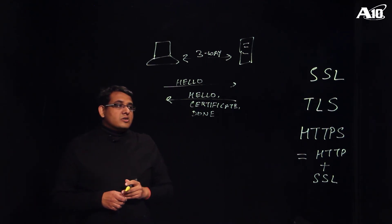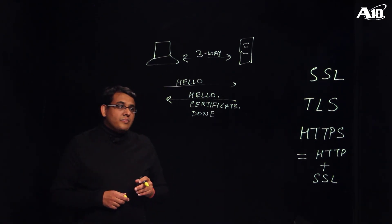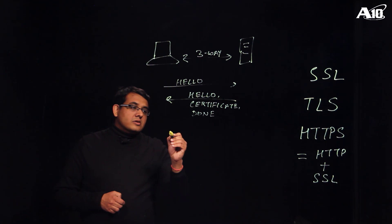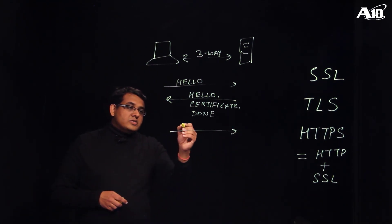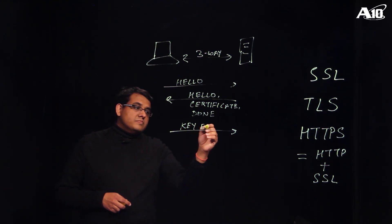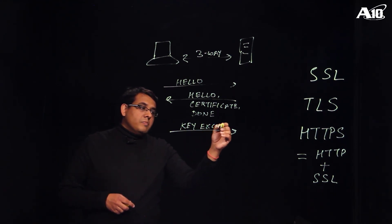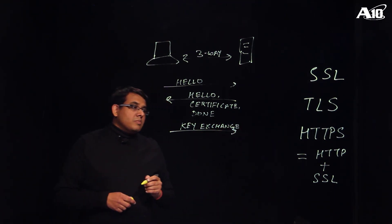The client will use the certificate to derive the public key of the server as well as to verify the identity of the server. It will compute a pre-shared key and send it back to the server by encrypting it. It will send this in a message called a key exchange message. The pre-shared key is encrypted using the public key of the server.